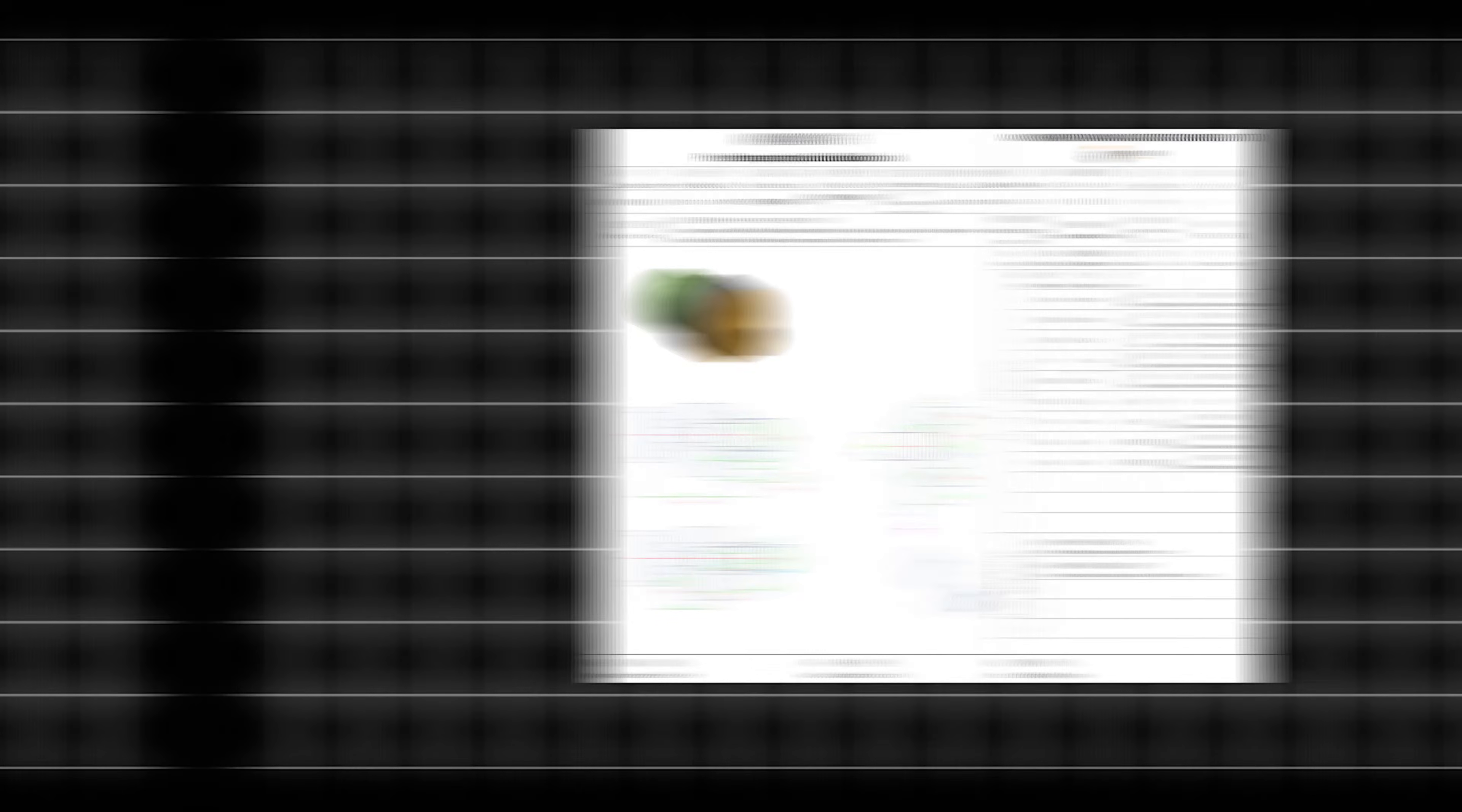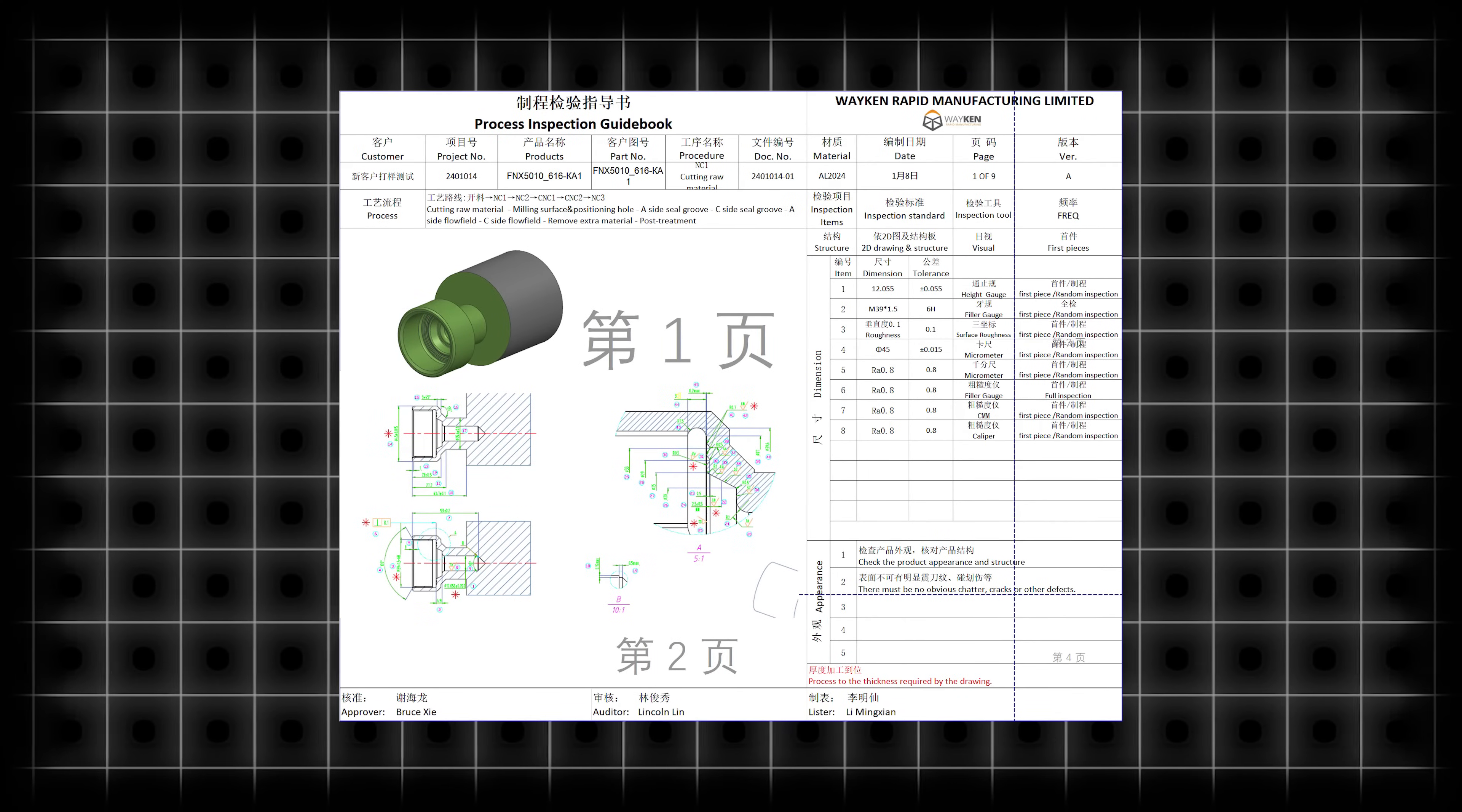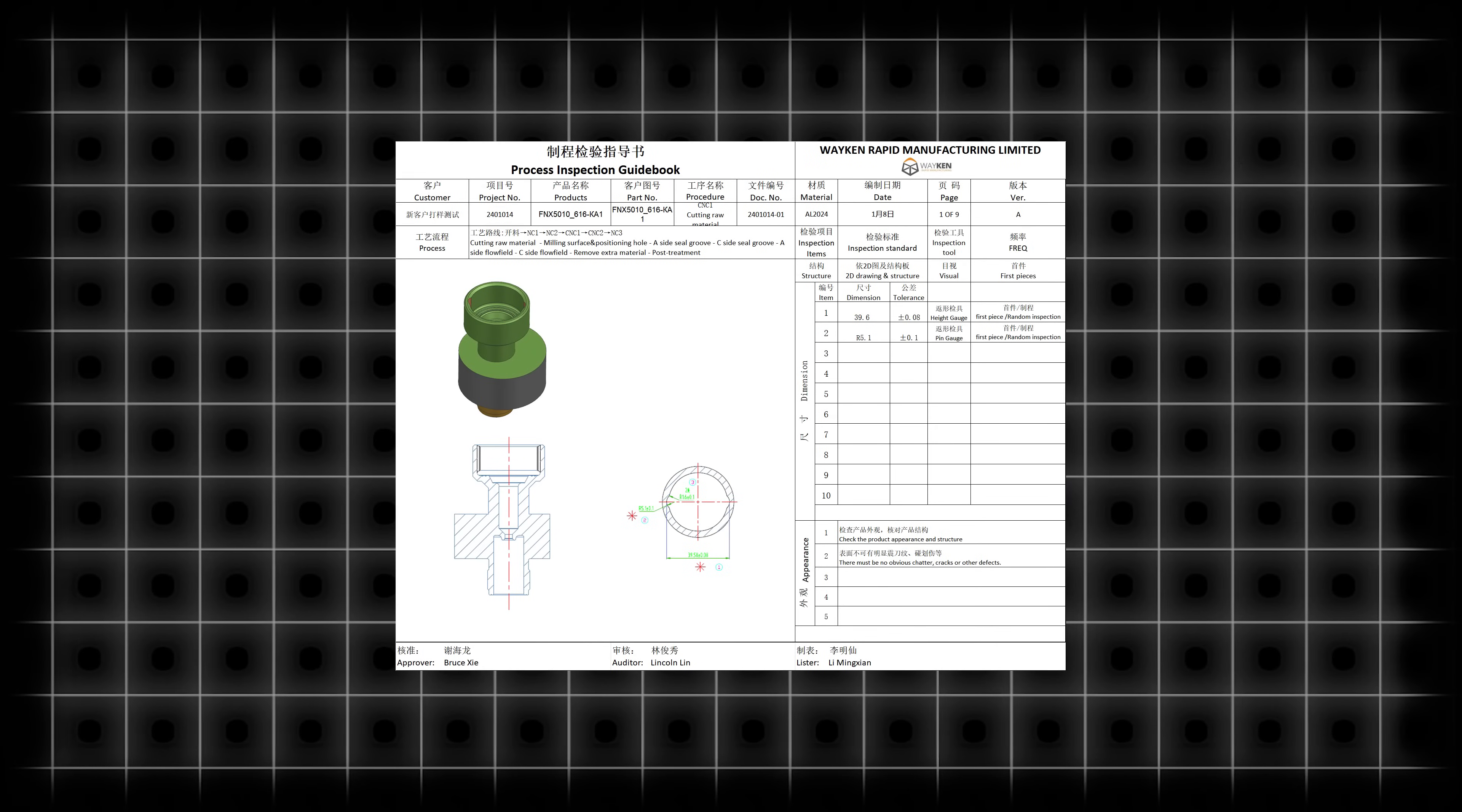For this part, we can find that the controlled dimensions in each step are listed respectively during the process.